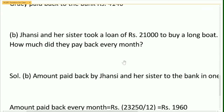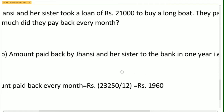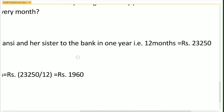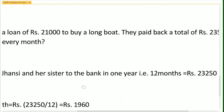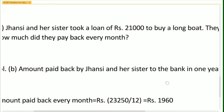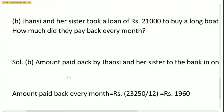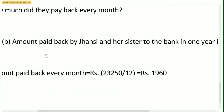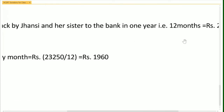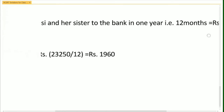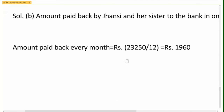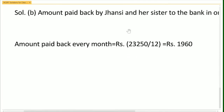Jahasi and her sister took a loan of Rs.21,000 to buy a long boat. They paid back a total of Rs.23,520 in one year. How much did they pay back every month? First take the total amount for one year, that is 12 months. The amount paid back every month is Rs.23,520 divided by 12, which equals Rs.1,960.